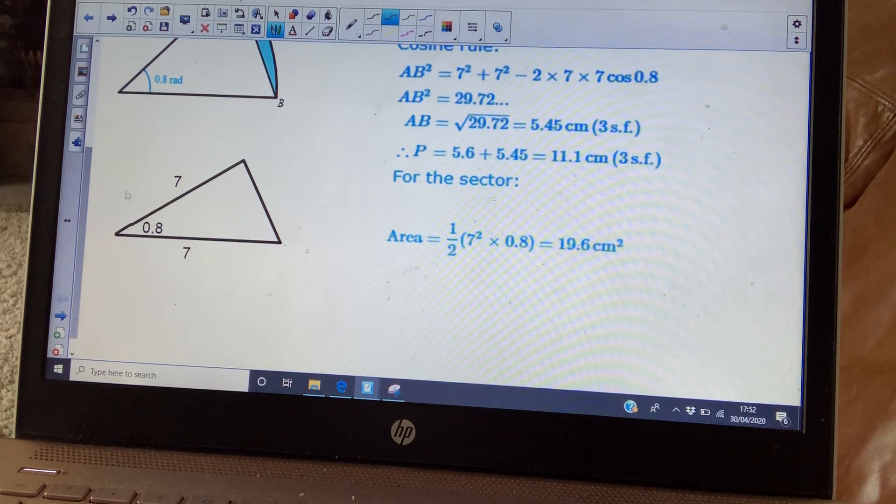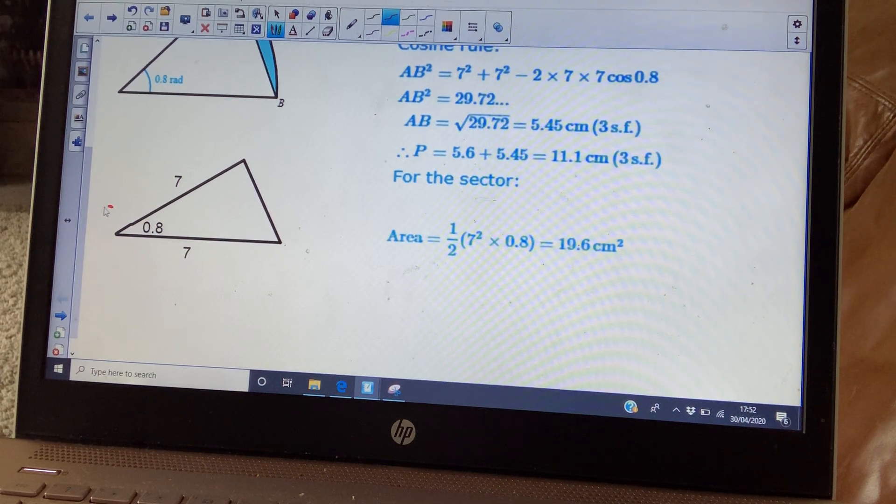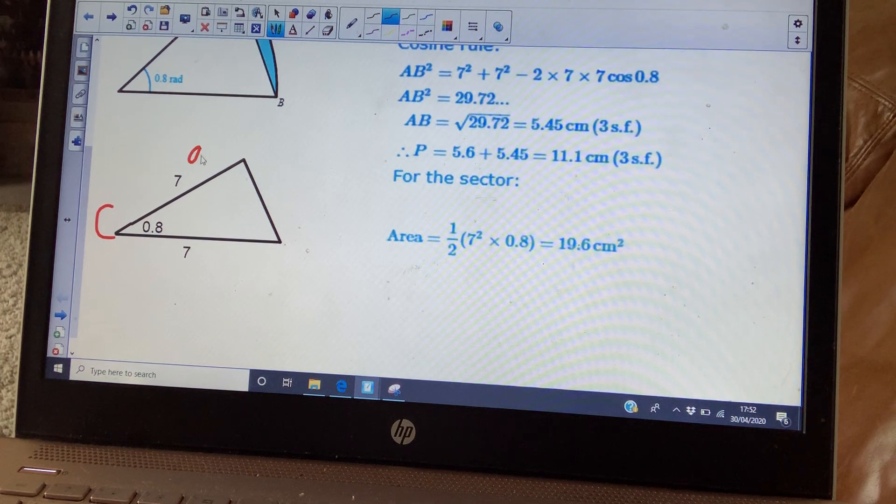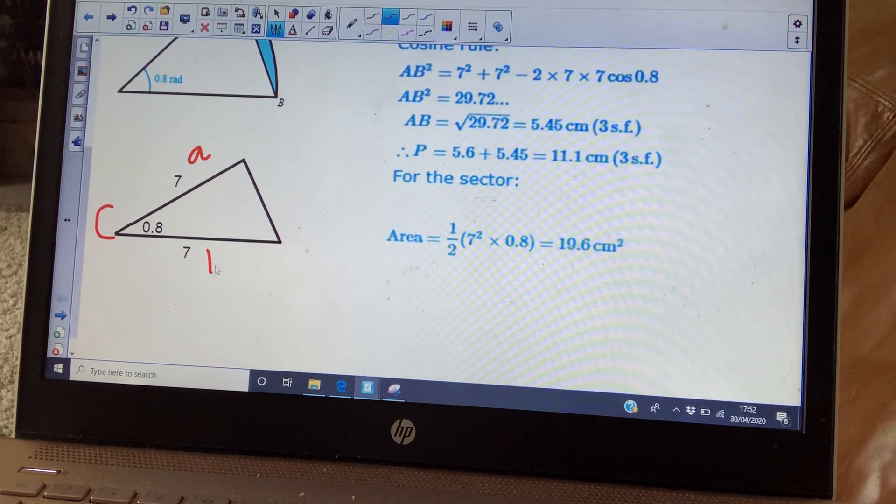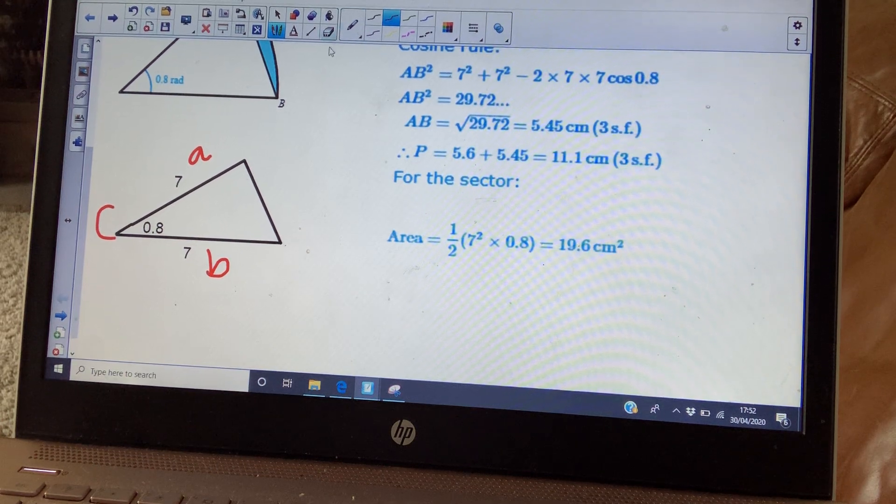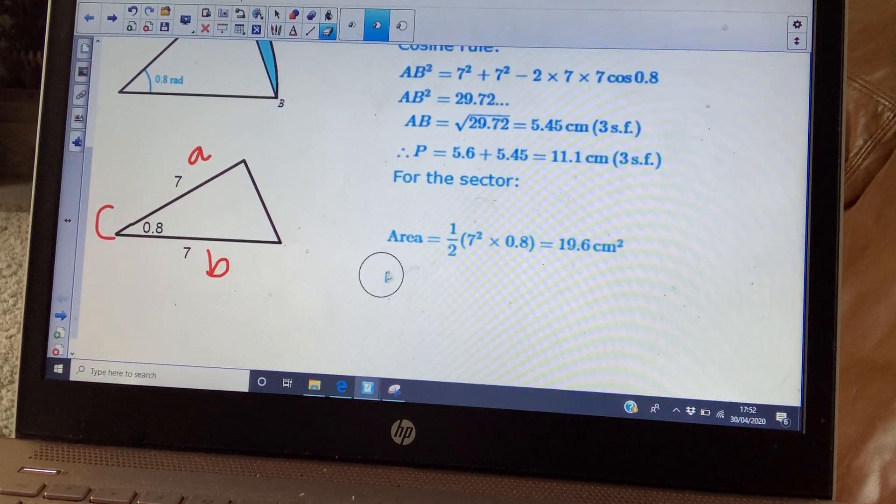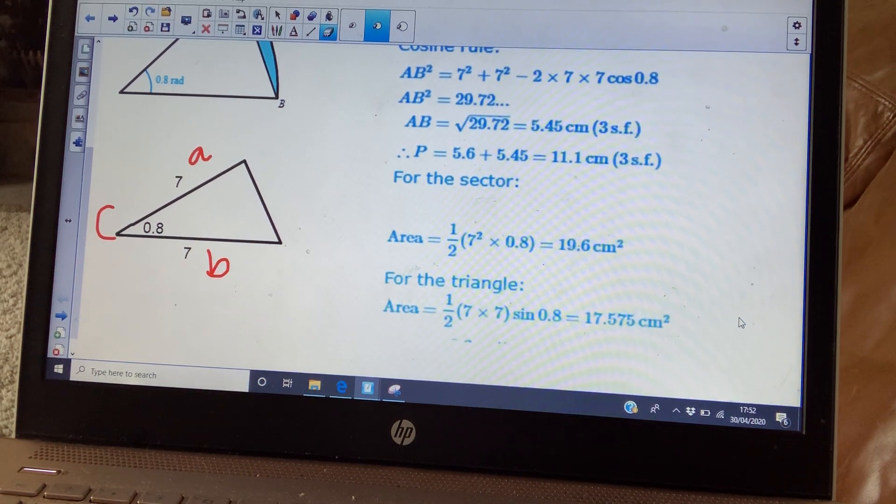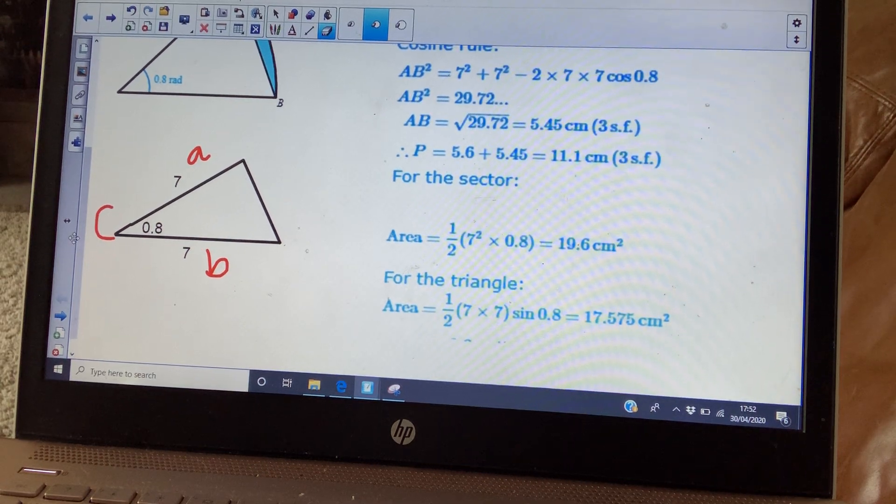What you would do is you would just use a half r squared times your angle in radians. So the area of your sector is going to be 19.6. You're now going to remove from that the area of the triangle. So for this, you're going to label your triangle. So you've got your angle C. These two sides will be A and B. So you're going to use a half AB sine C to find the area of your triangle. So that's going to be a half times 7 times 7 times the sine of 0.8, so 17.575.